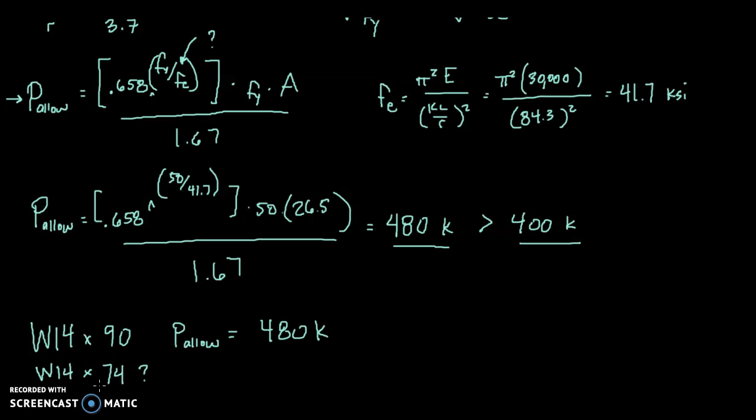And test that. If that works, go to the next smallest one, a W14 by 61. Just keep trying to get more efficient, choosing smaller columns until you get one that doesn't work. Then obviously, we'd go with the next biggest column.